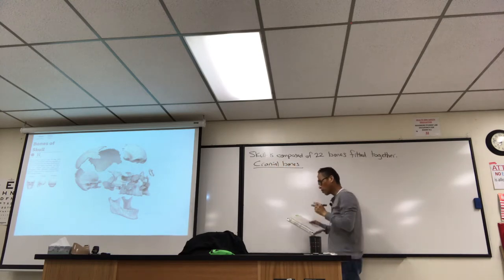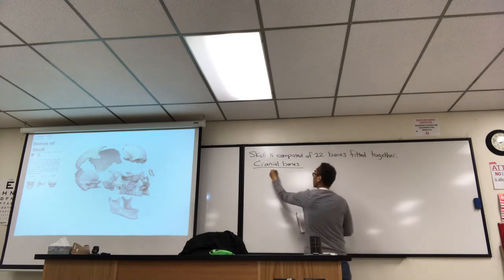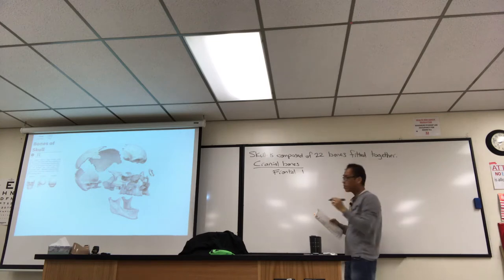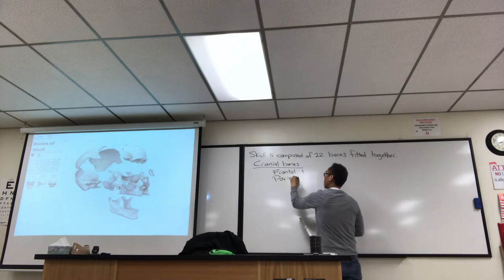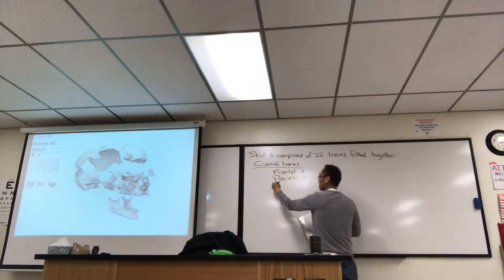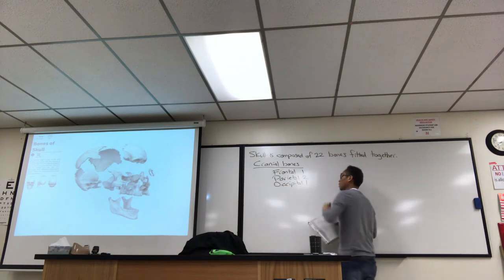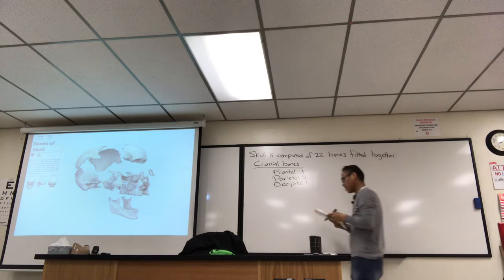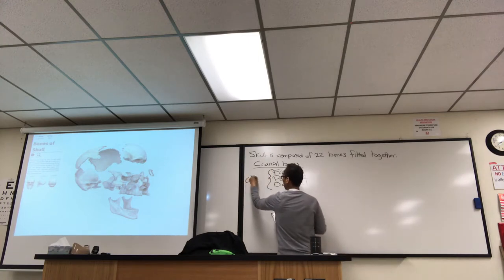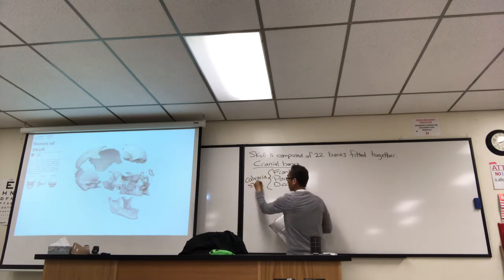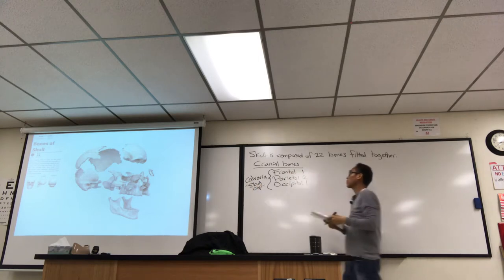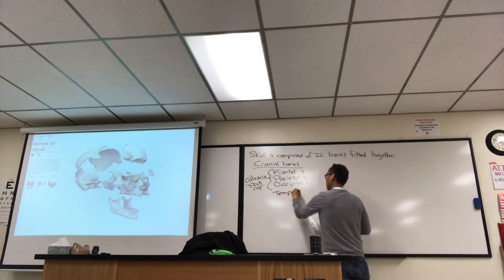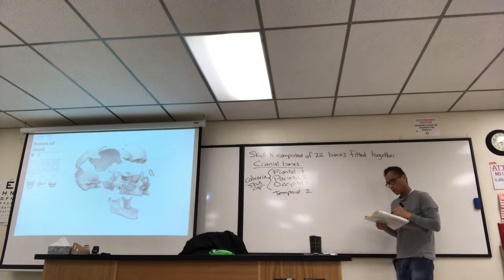Cranial bones include: the frontal bone — you have one; two parietal bones; one occipital bone. Those three are called the skull cap, and the anatomy term for skull cap is calvaria. Cranial bones also include the temporal bones — two of those — plus one sphenoid and one ethmoid.